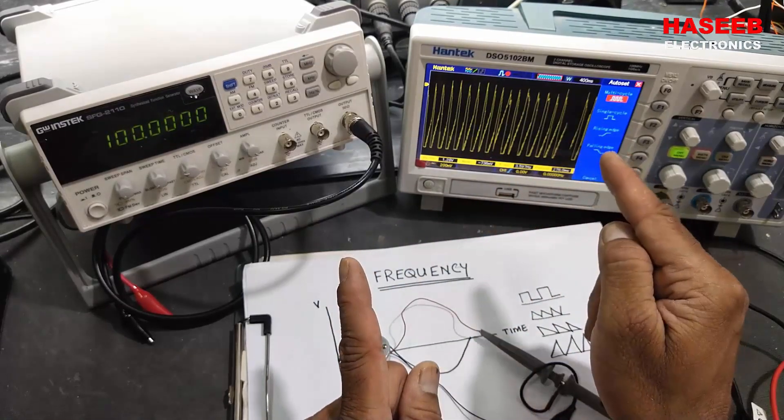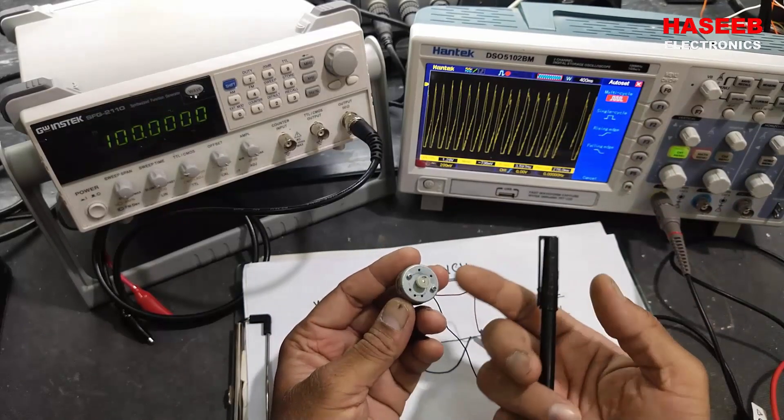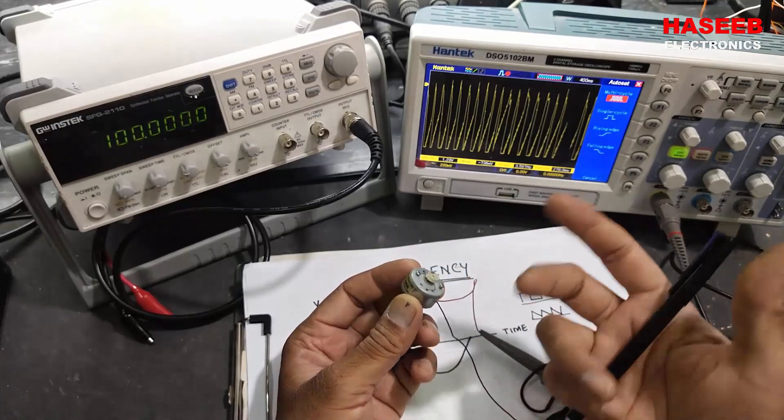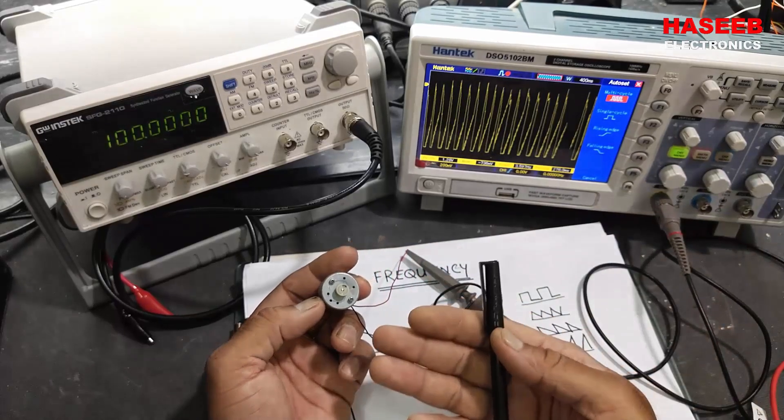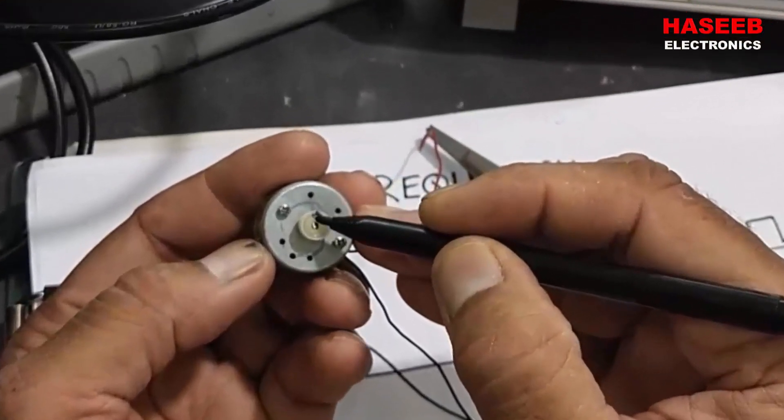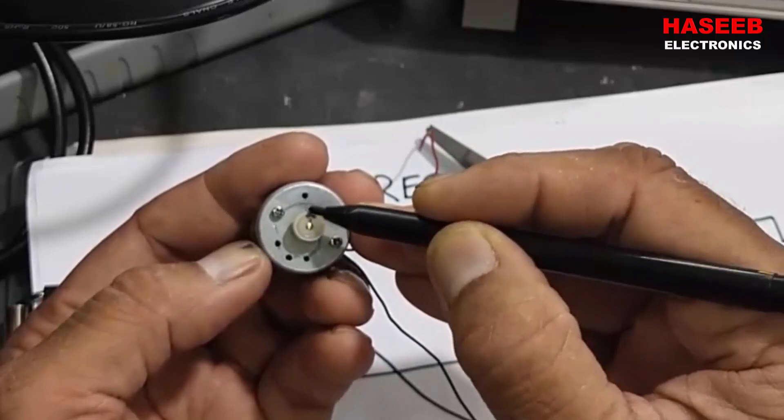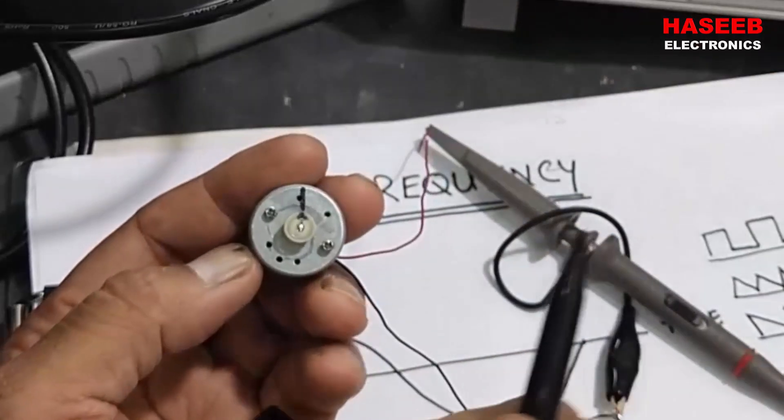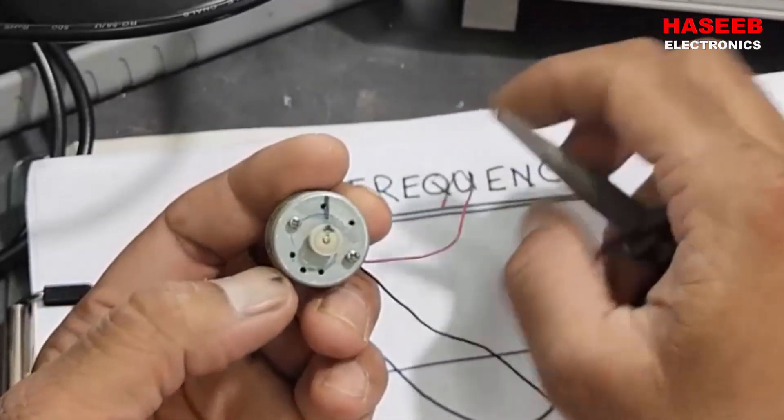What is that? I am using this permanent magnet DC motor used in DVDs and CD players. I am using it as a generator to demonstrate because this time I don't have a generator, so we will use this motor as a generator to generate some signal, some voltage. I will mark this rotor position and we will mark this physical position.